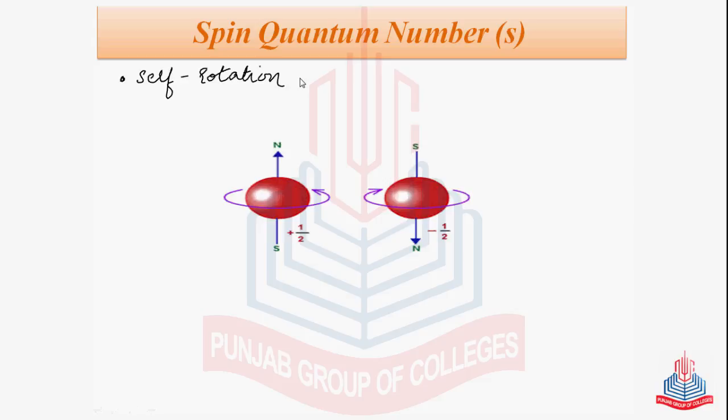As we can see here, this spinning of the electron about its own axis can be in a clockwise direction or it can be in the anticlockwise direction.